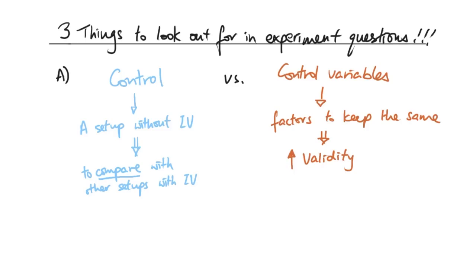The control variables in that scenario would be things like using the same volume of solutions and water, the same age, length, and species of plants, the same soil pH, temperature, light intensity, and carbon dioxide concentration. Anything that would impact the growth of the plant would be a control variable. Be careful — examiners sometimes give you a scenario and ask what is the purpose of the setup without the independent variable. Your answer should be: to compare it with the other setups that have the independent variable.